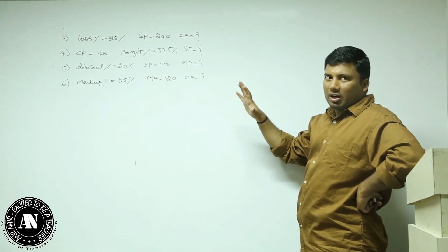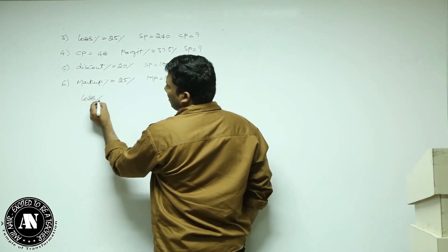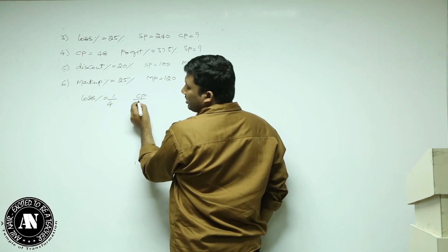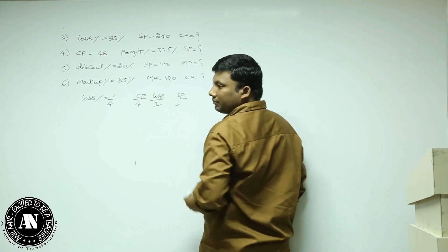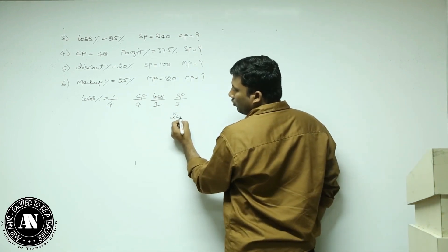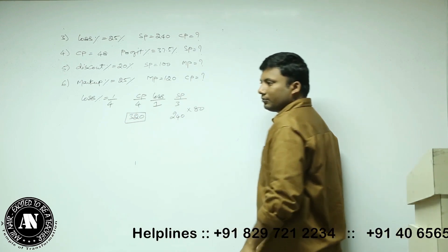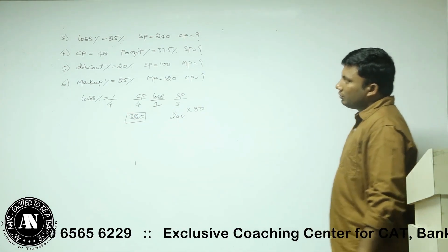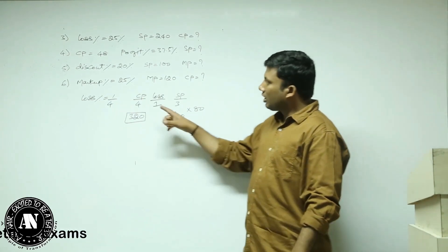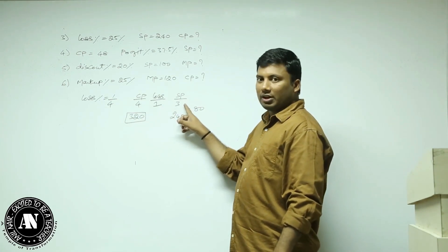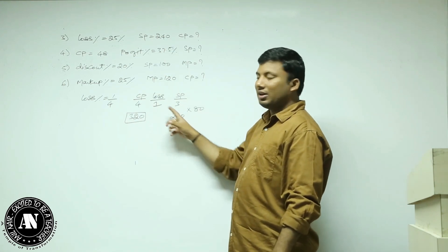Try to solve entire profit, loss, and discount using multiplication factors. First: loss percentage is 25%, which is 1 by 4. If cost price is 4, loss is 1, selling price will be 3. But according to the question, selling price is not 3 but 240. So 3 times 80 equals 240, and 4 times 80 equals 320. Cost price is 320.